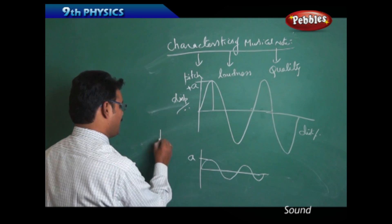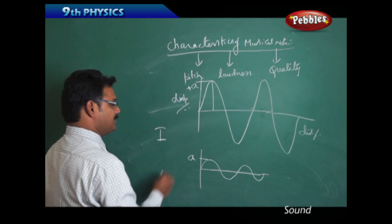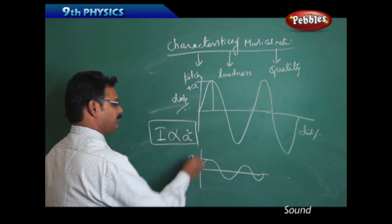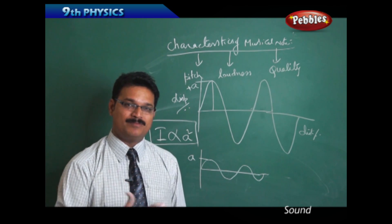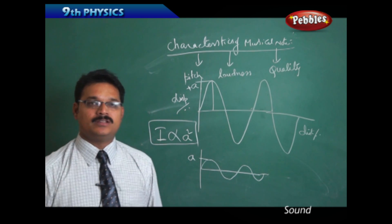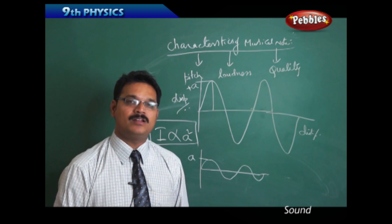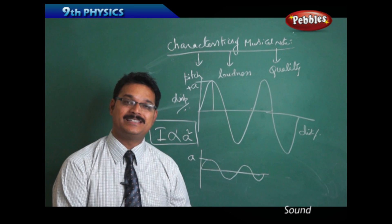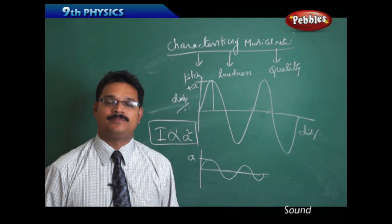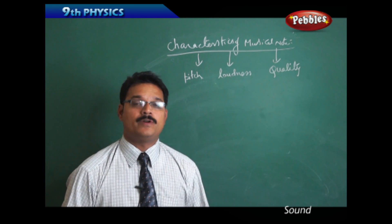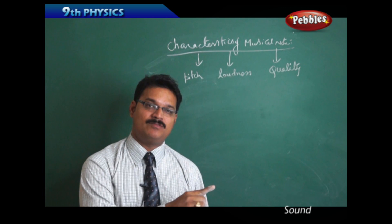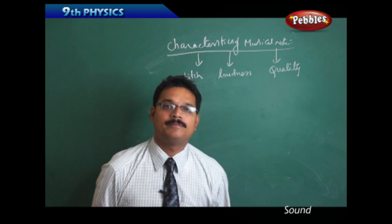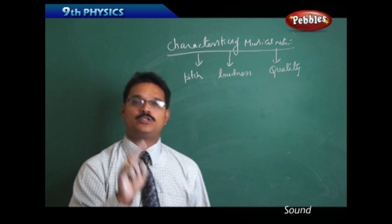When a sound has more loudness, it means the sound has more intensity. Intensity I is directly proportional to the square of the amplitude. So I can say it in different ways: this sound has larger amplitude, or this sound has larger intensity — both mean the same thing. So we now understand high pitch sound and louder sound.